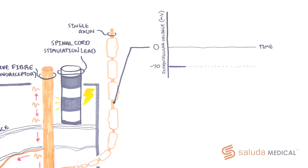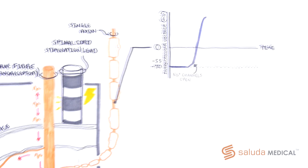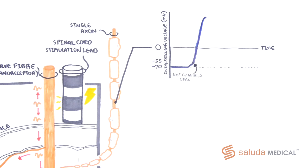At the initiation of the action potential, sodium channels open and sodium ions rush into the cell, increasing the intracellular potential. This flips the voltage inside the cell from negative to positive. This is called depolarization.